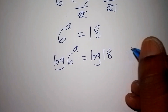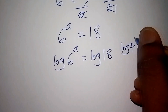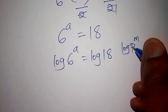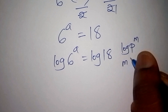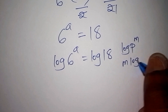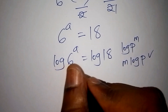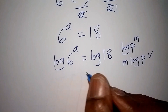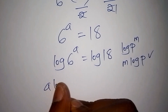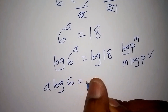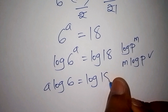Recall that the log of p to the power of m can also be written as m times the log of p. So from there, the log of 6 to the power of a can be written as a times the log of 6, equal to the log of 18.